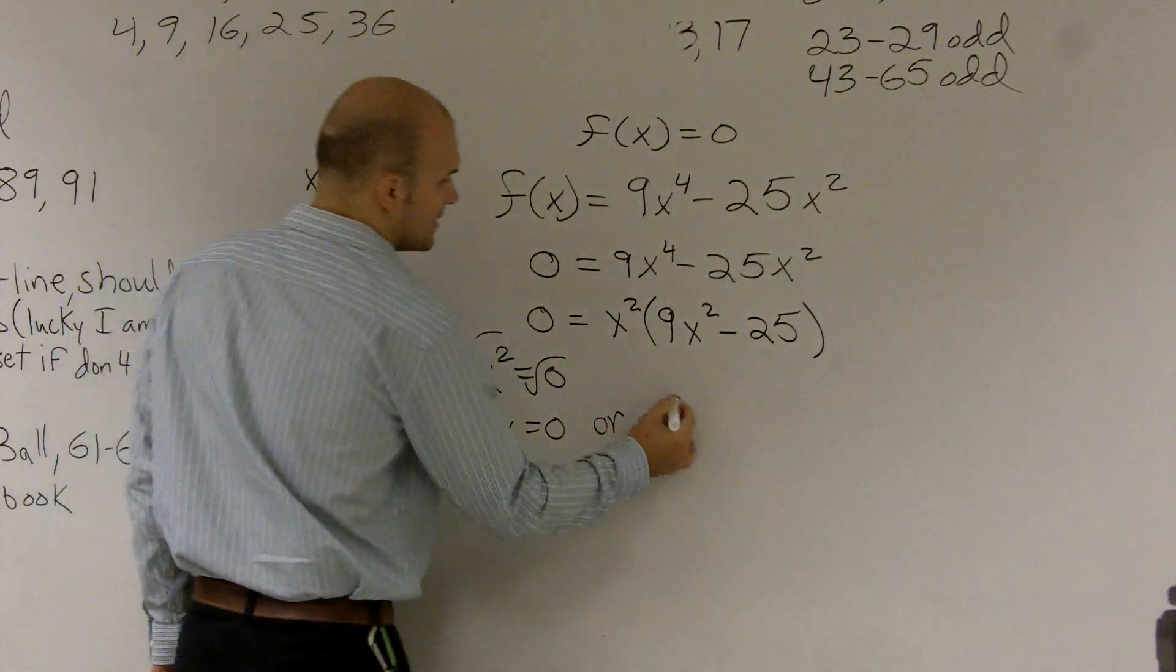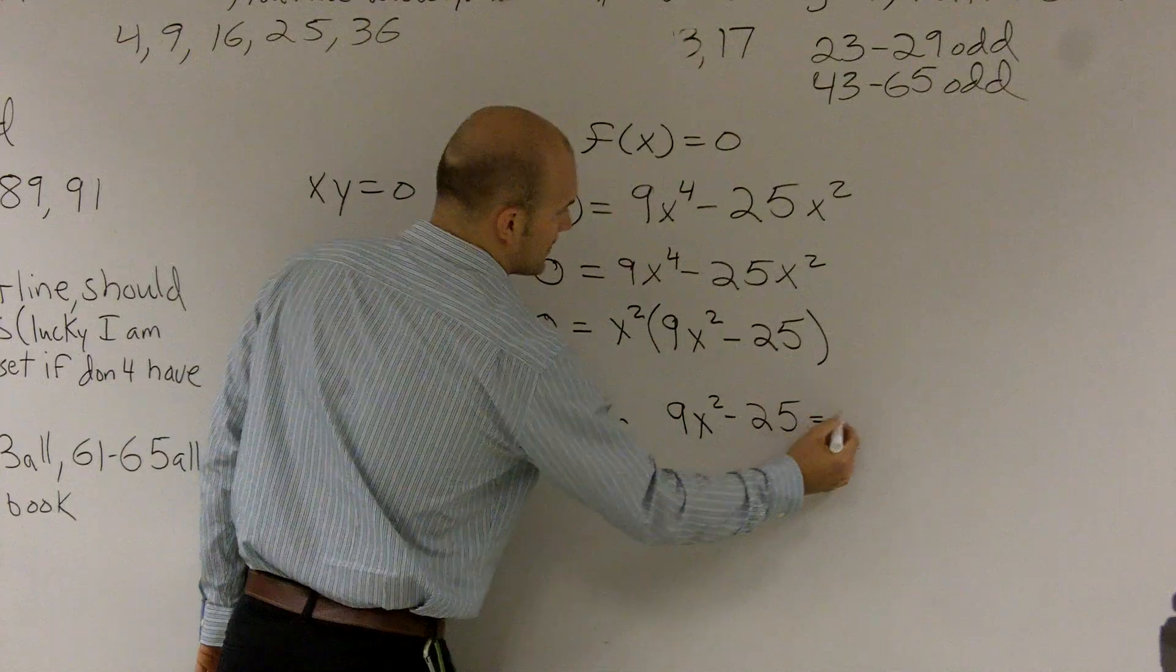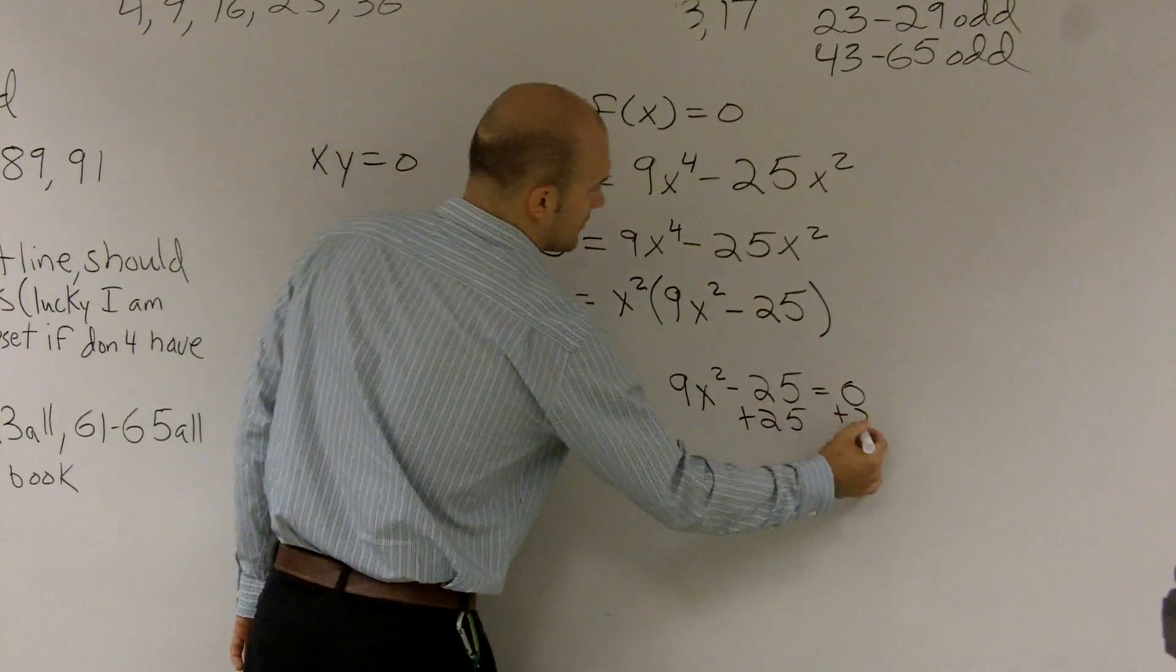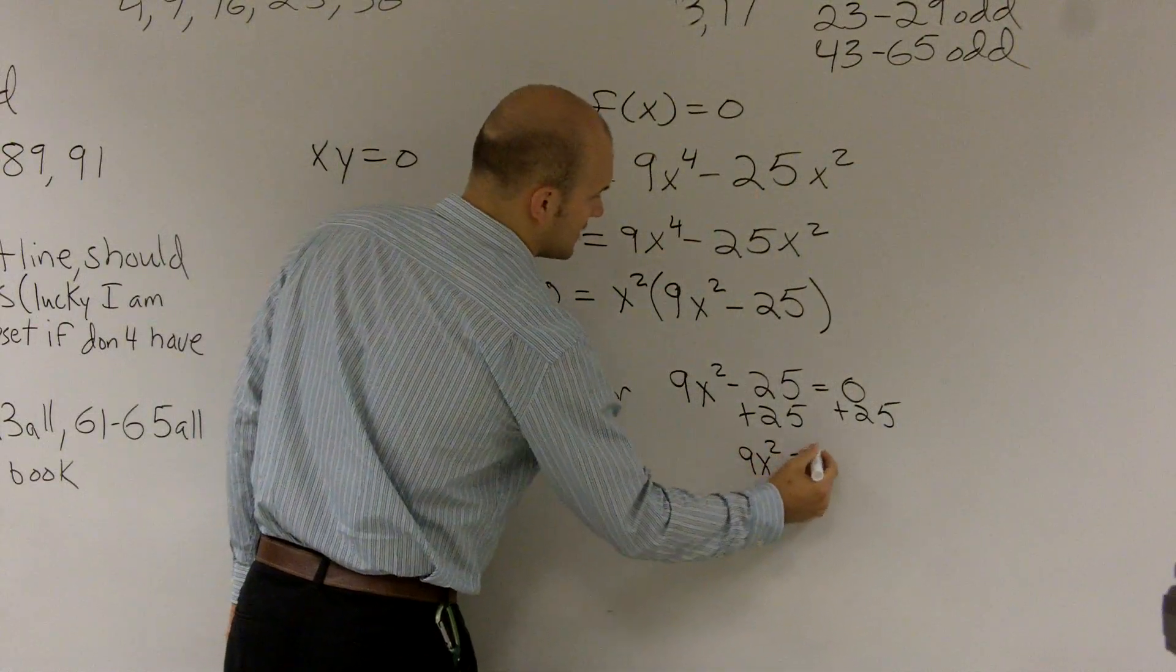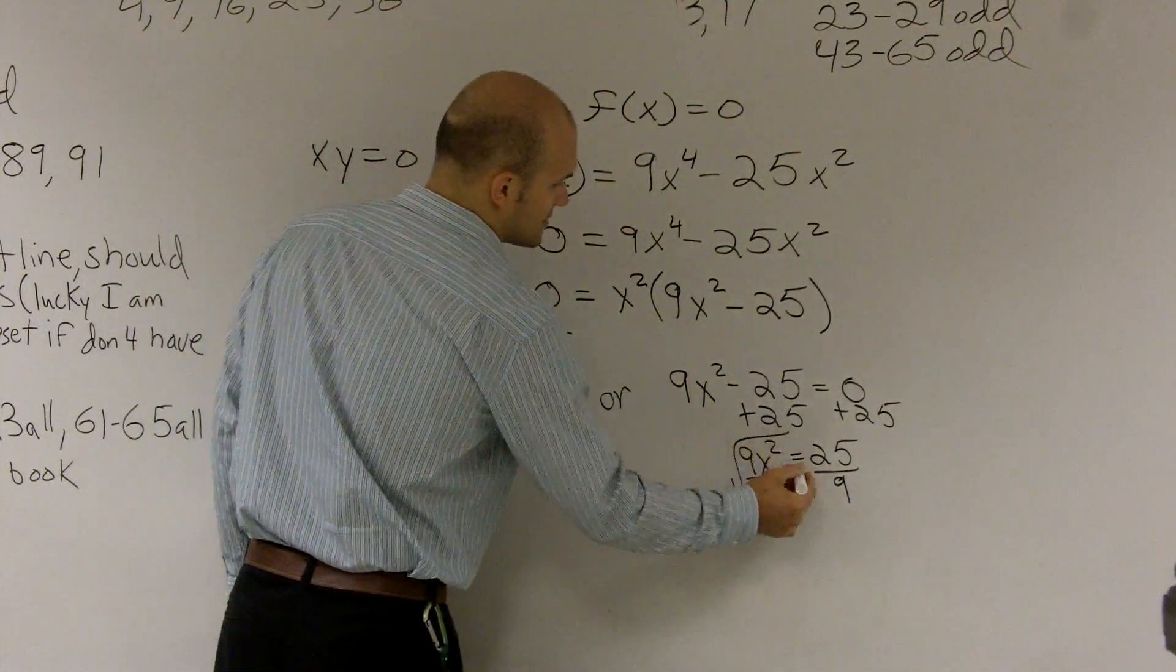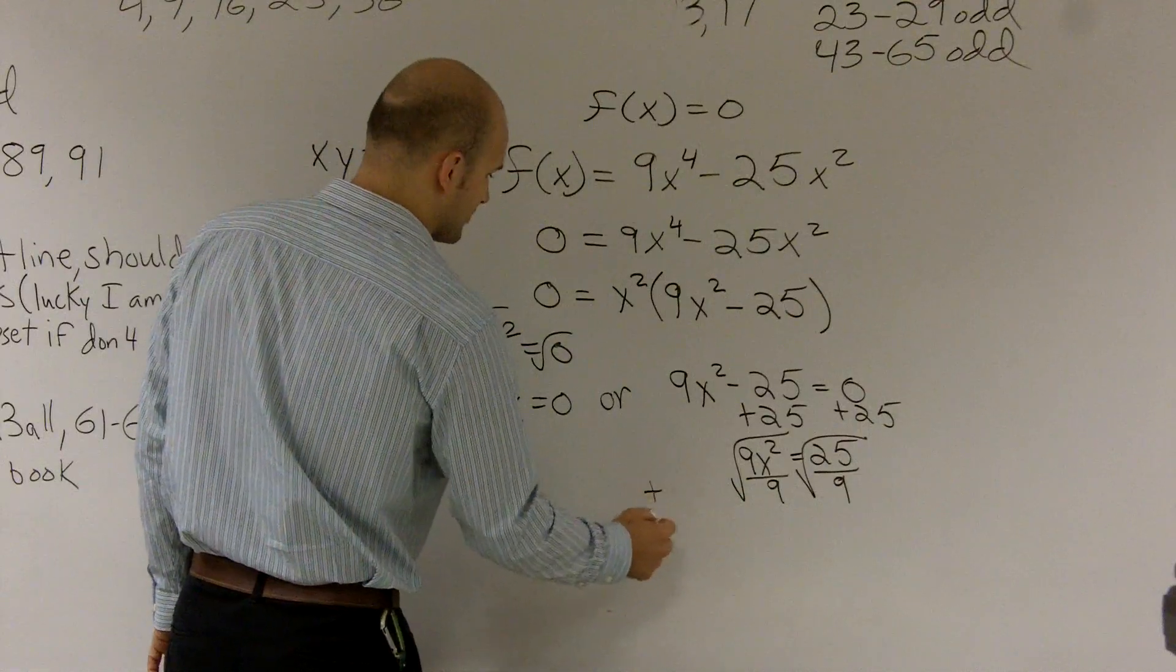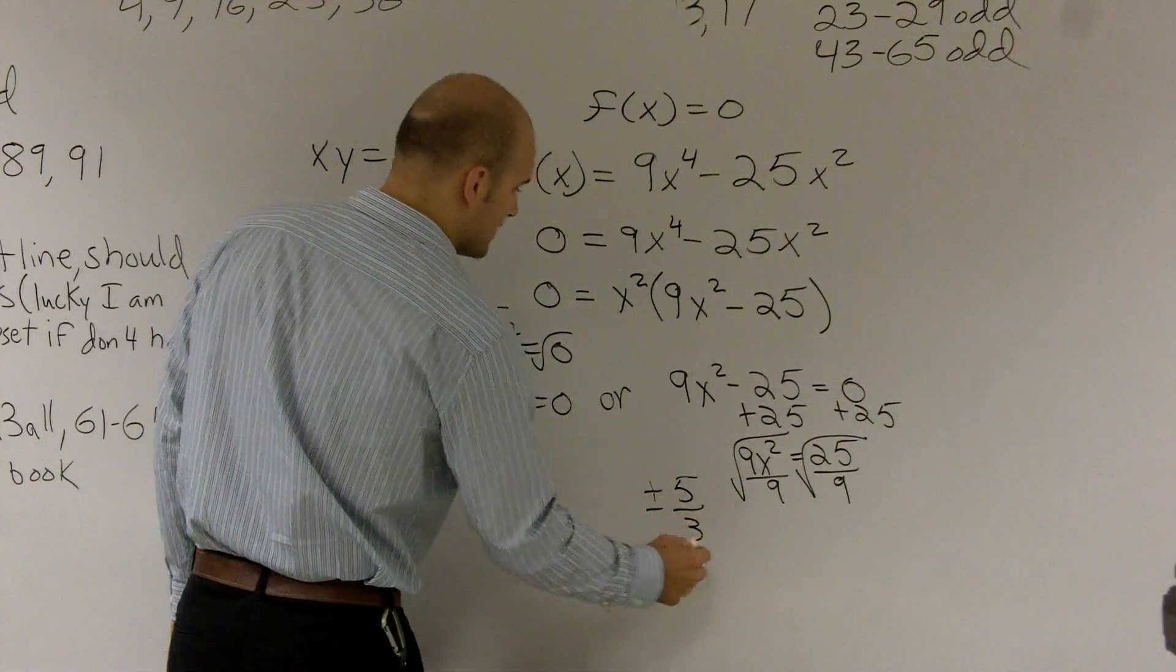Or we can say 9x squared minus 25 equals zero. And here we just have a little bit of math. Add my 25 on both sides. 9x squared equals 25. Divide by 9. Now I take the square root. So I'm left with x equals plus or minus 5 thirds.